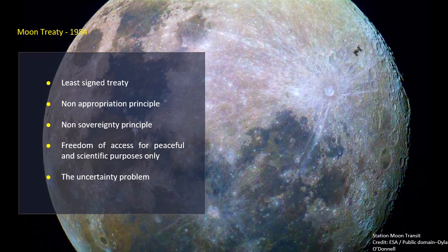The second treaty we will analyze is the Moon Agreement, adopted by the General Assembly in 1979, but which did not enter into force until July 1984. This agreement reaffirms and elaborates on many provisions of the Outer Space Treaty as applied to the Moon and other celestial bodies, providing that those bodies should be used exclusively for peaceful purposes.